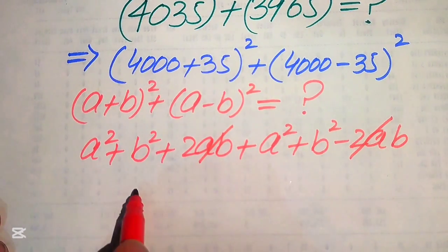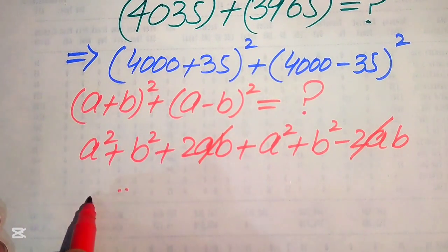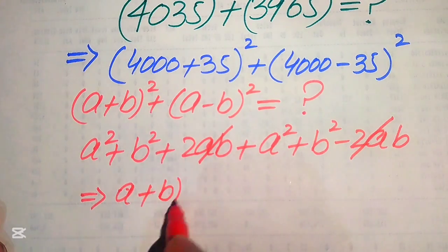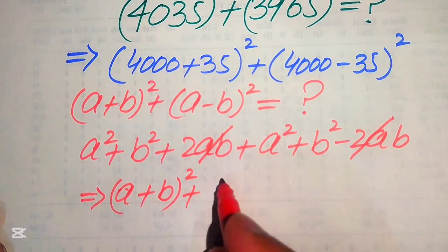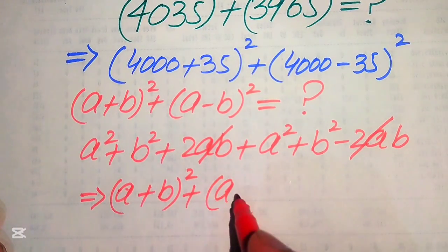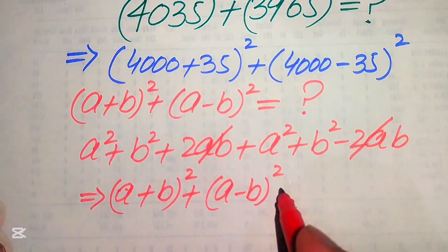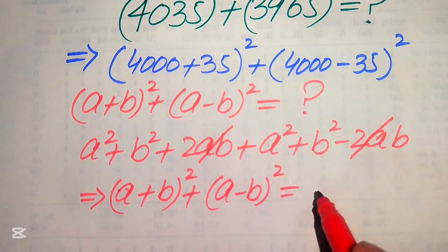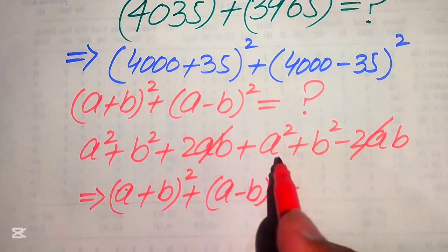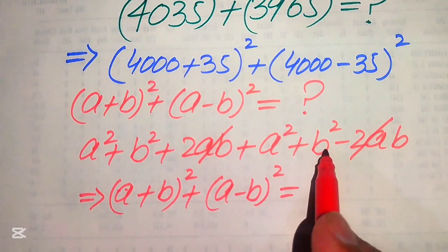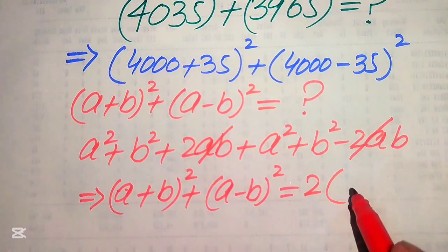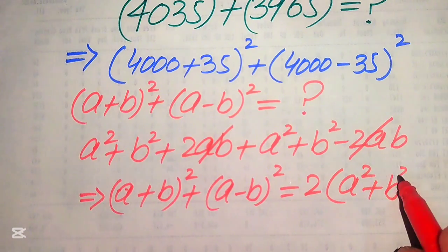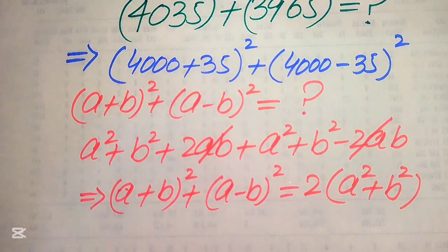You can see that the 2ab terms cancel out, and finally we get that (a + b)² + (a − b)² equals 2a² + 2b², which we write as 2 times of (a² + b²).